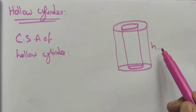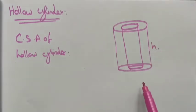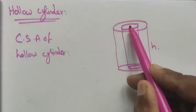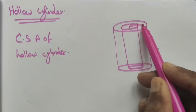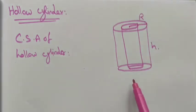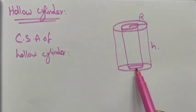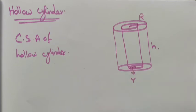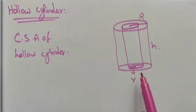See here we have the height as h. We have two radii: one radius is from the center to the outer portion, which we take as capital R, and another radius is from the center to the inner portion, which we take as small r.